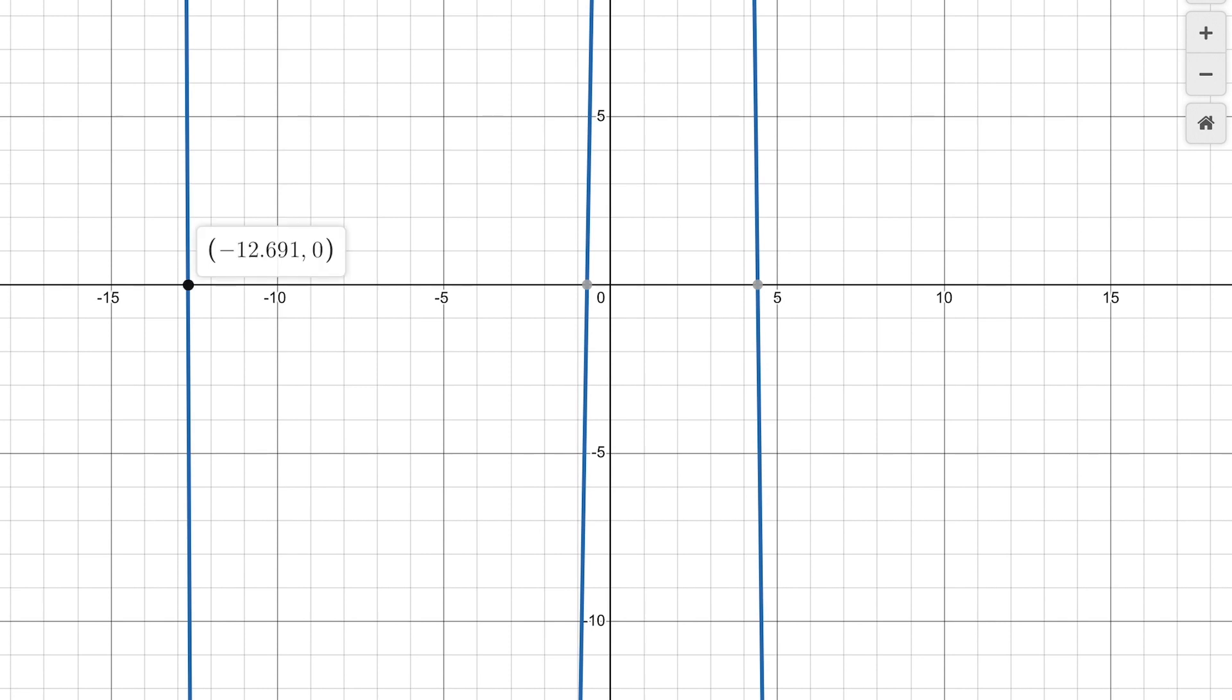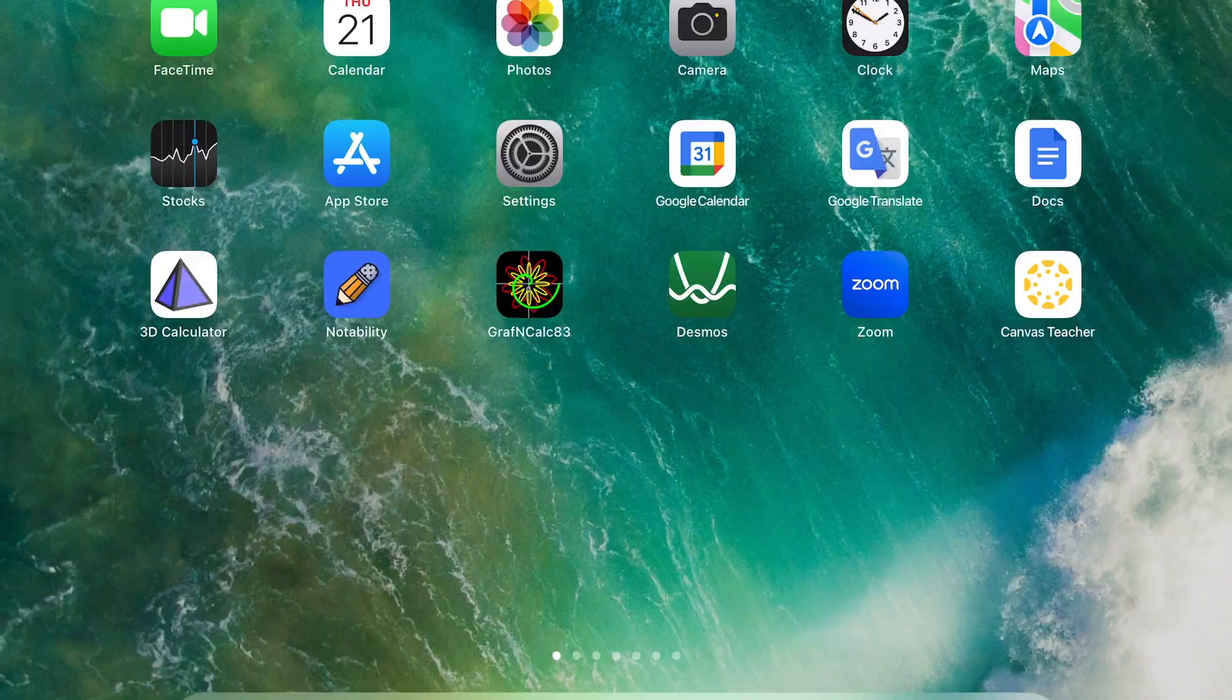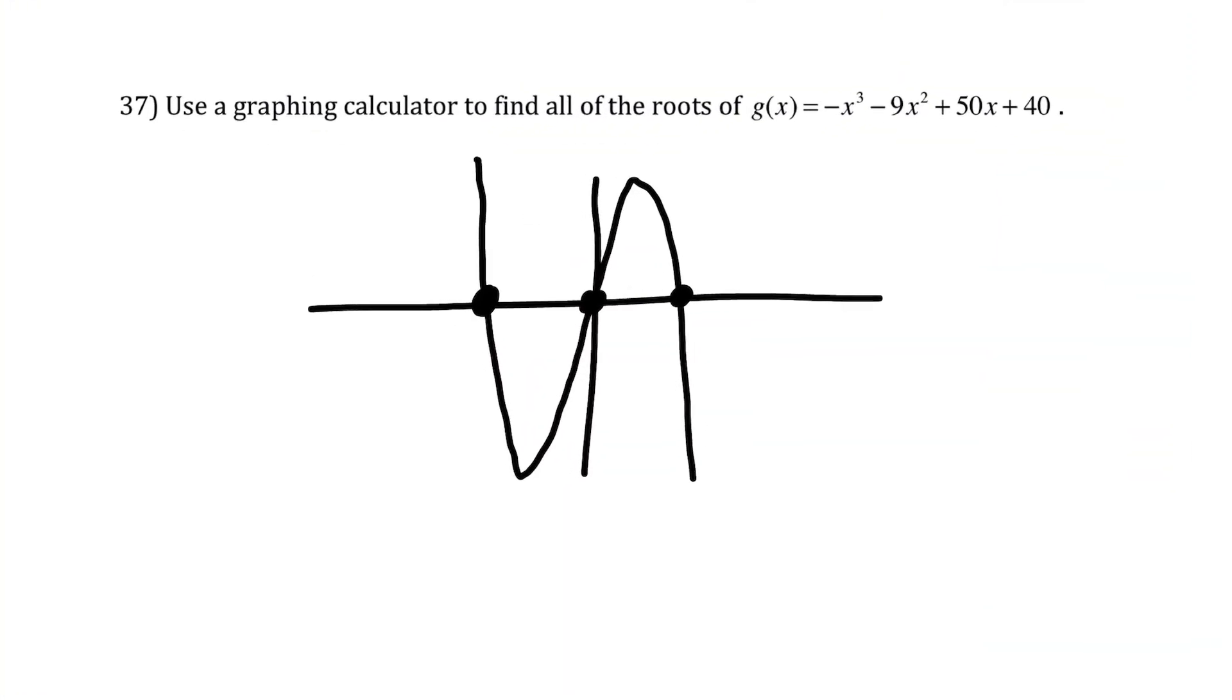And then with Desmos, all you need to do is basically just touch it at that point. And it gives us the negative 12.691, which is what the TI-84 gave. And then this one is negative 0.715. And then 4.407. So there's not really any work to show with this one. I just need to go back to this. And then, so you can either write out your answers just as x equals each one, or you could say, basically like labeling the graph, x equals negative 12.691 is this one. This one right here is x equals the negative 0.715. And then this one is x equals 4.407.